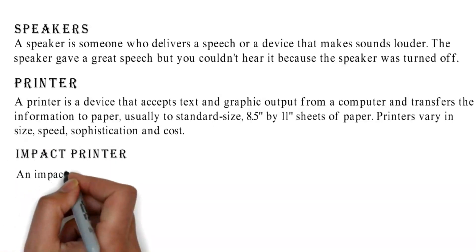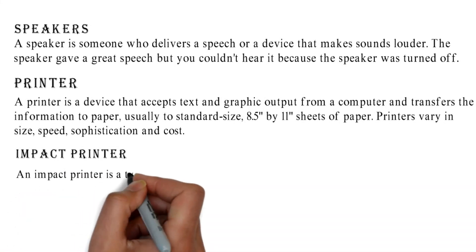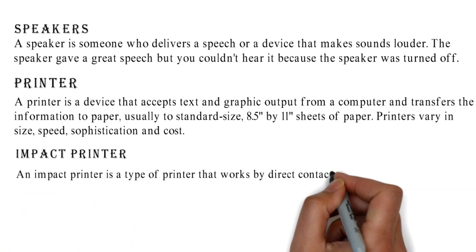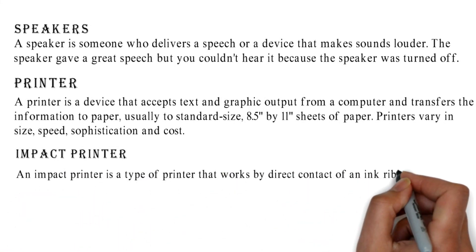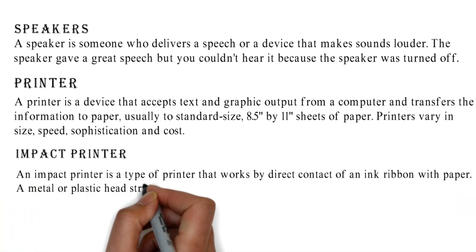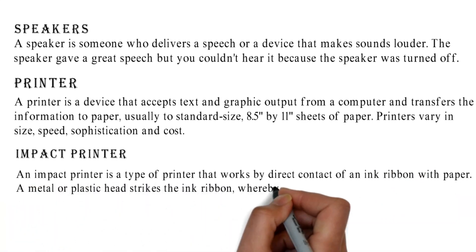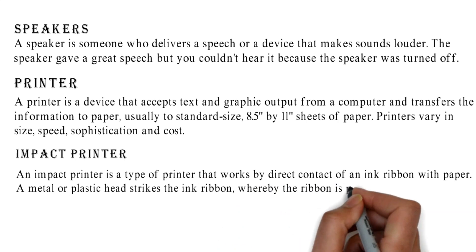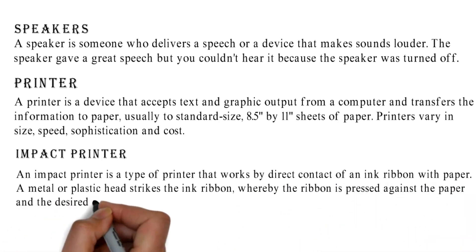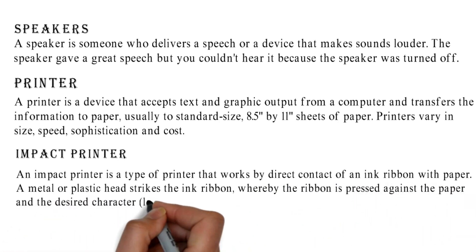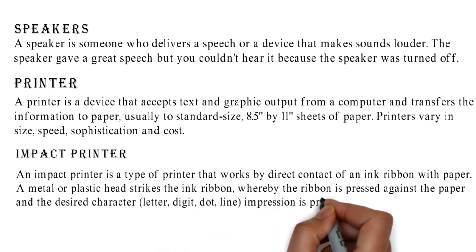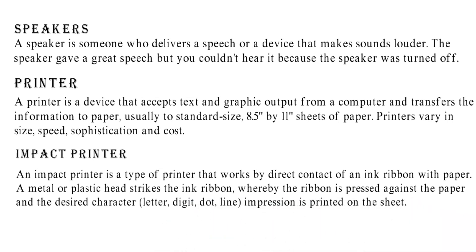Impact Printer. An impact printer is a type of printer that works by direct contact of an ink ribbon with paper. A metal or plastic head strikes the ink ribbon, whereby the ribbon is pressed against the paper and the desired character, letter, digit, or line impression is printed on the sheet.